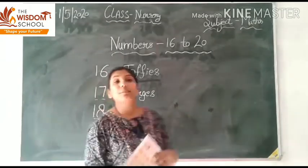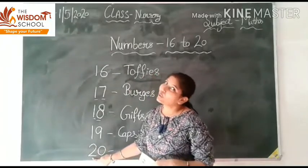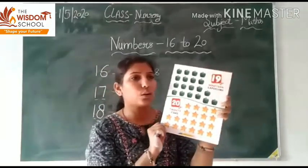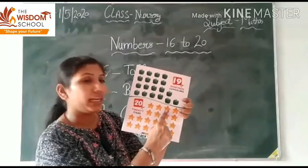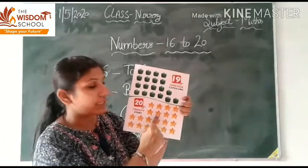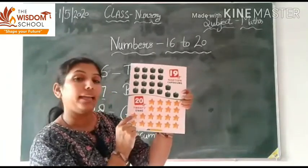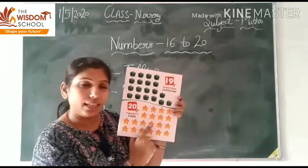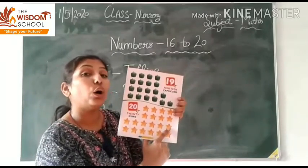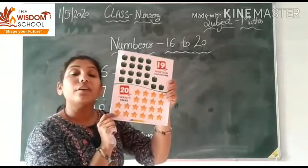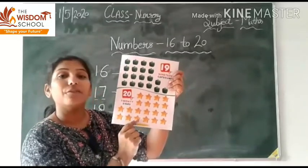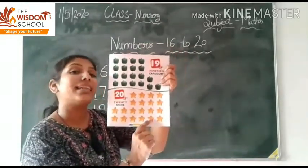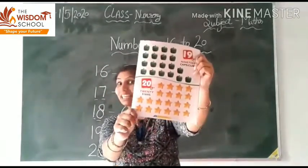Okay, last — 19 to 20. 20. There are 20. How many stars are there? Okay, हम count करते हैं. Come on — 1 2 3 4 5 6 7 8 9 10 11 12 13 14 — very good — 15 16 17 18 19 — and the last — 20. 20 stars.